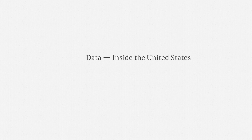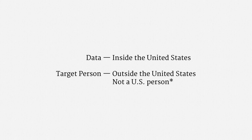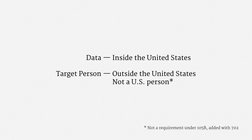The Section 702 surveillance authority applies when data is inside the United States, and the person targeted for surveillance is both outside the United States and not a U.S. person. I've thrown an asterisk on the non-U.S. person requirement because it wasn't included in the original Section 105, but it was added with the FISA Amendments Act.